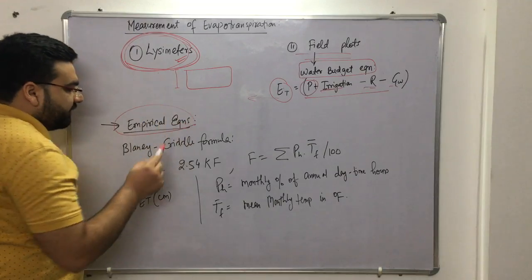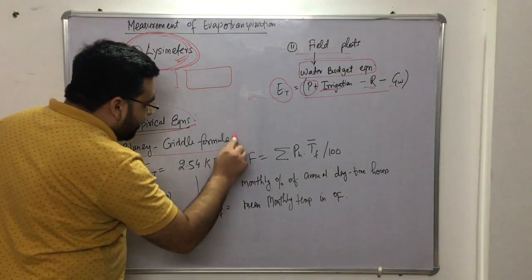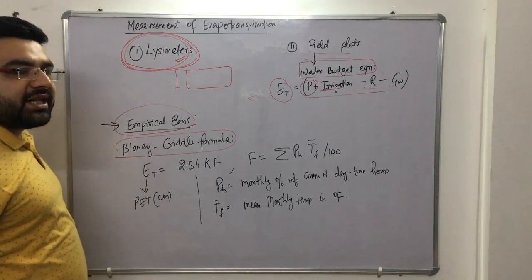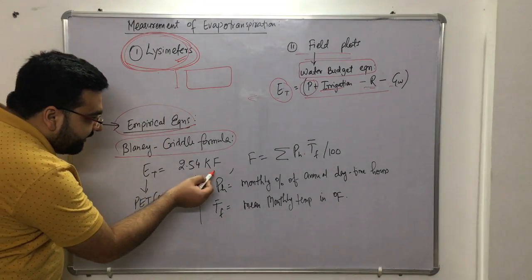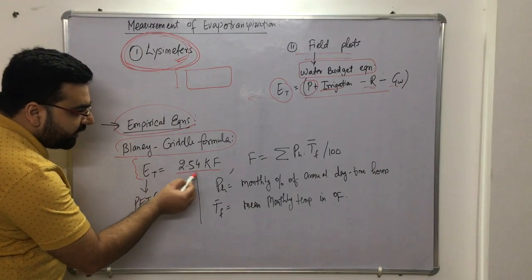We have some empirical formulas also, like the Penman equation, but the important equation is the Blaney-Criddle formula. This is also used in irrigation. The formula is: Evapotranspiration = 2.54 × K × F.